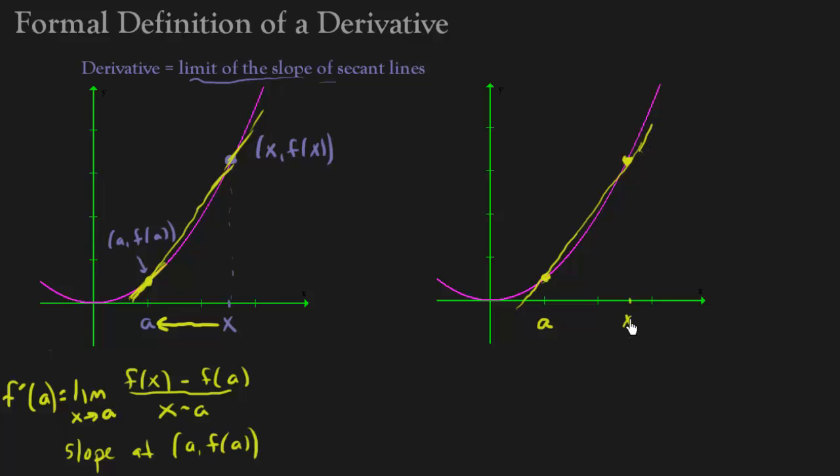But instead of using x, because this is kind of like two different variables. We have a, and then we have x, two different x values. What we're going to do is we're going to actually define x as a plus h. So that means the distance from the x to a, that's a distance of h.